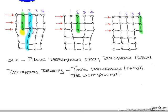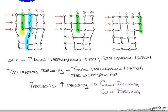You'll find that different types of processing we do will actually increase our dislocation density. For instance, processes that can increase your dislocation density include cold rolling. Another process that may increase your dislocation density is cold forging.